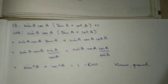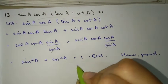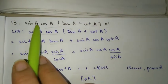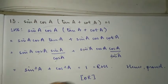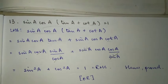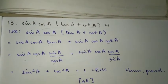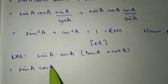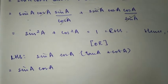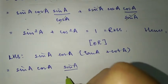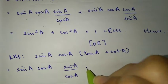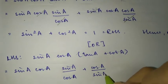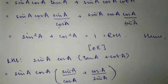That's how you solve question 13 using the first method. Now for the second method: instead of expanding brackets first, we convert tan and cot directly inside the bracket. So LHS becomes sin A cos A multiplied by (sin A by cos A plus cos A by sin A).